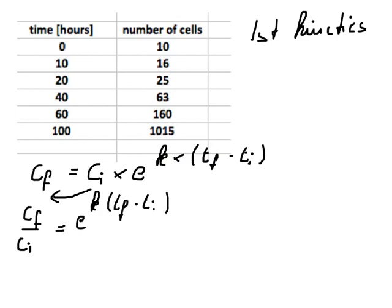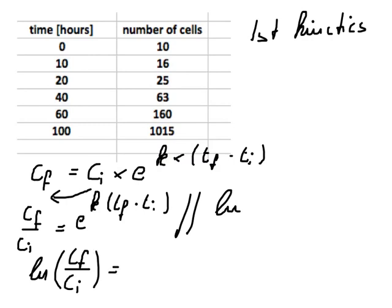In order to get rid of this e I simply take the ln of both sides so I end up with ln of C final divided by the initial cell count equals k times t final minus t initial.